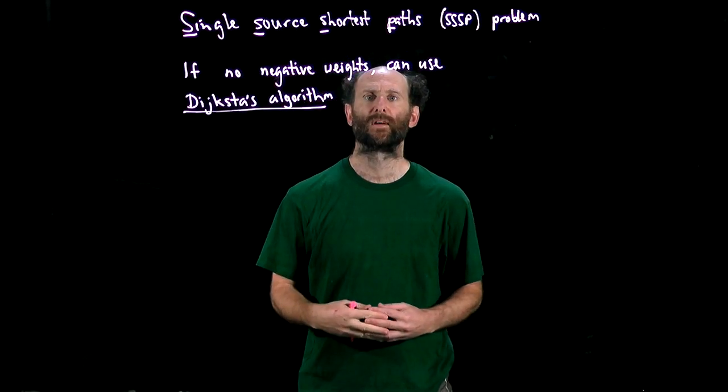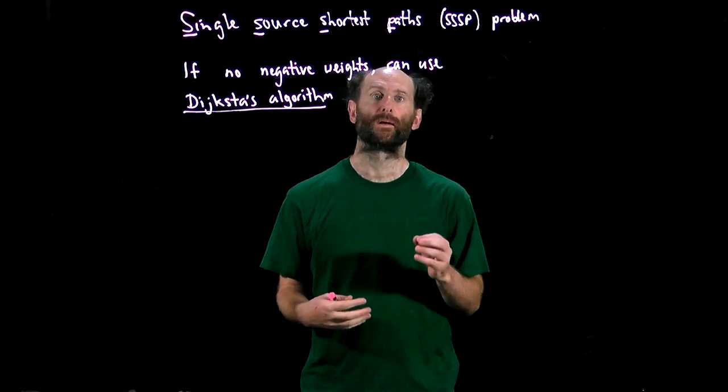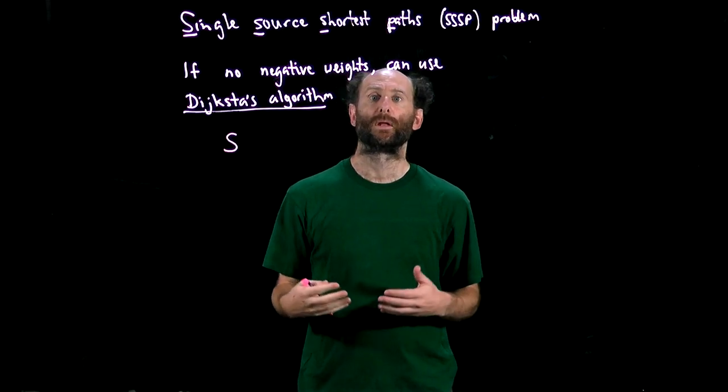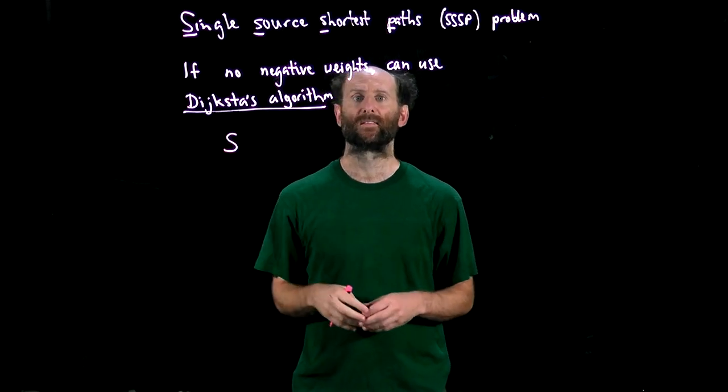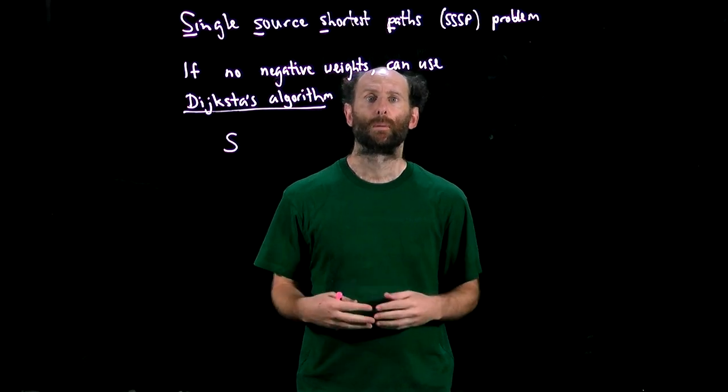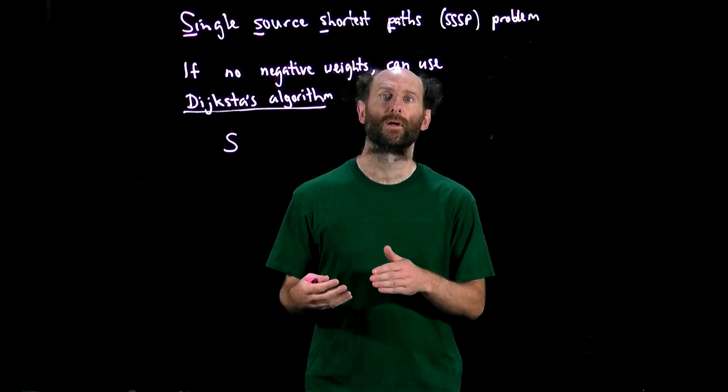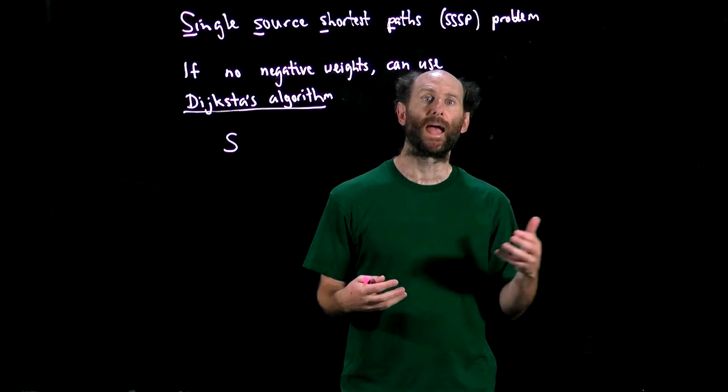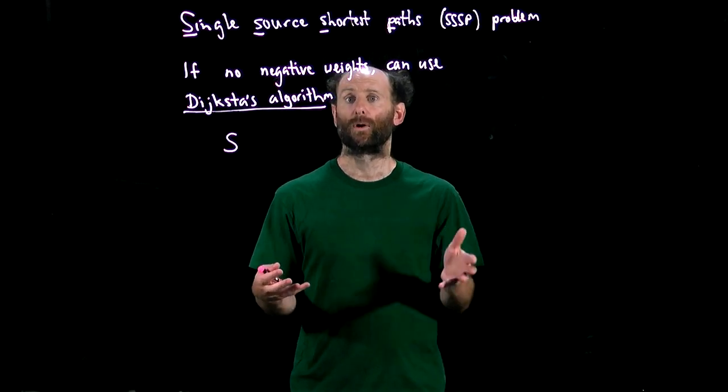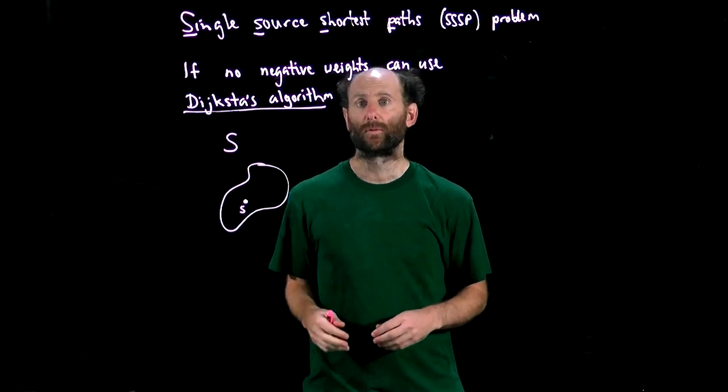So the basic idea of Dijkstra's algorithm is that we'll build up a solution to the single source shortest paths problem one node at a time. We'll have a set of visited nodes we'll call S and will ensure that we add nodes to S in such a way that the shortest path from the source to any node in S is indeed the minimum weight path. We'll also keep track of the distances of all nodes in the digraph from the source using only paths that go through S. Every time we add a node to S we'll need to update these distances and then once we've added all nodes to S we're going to be finished.